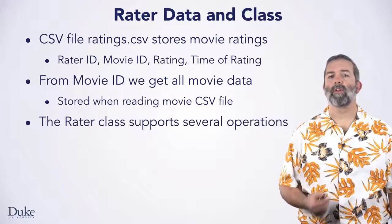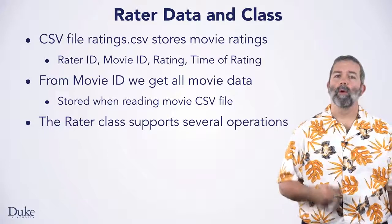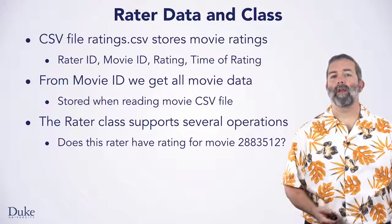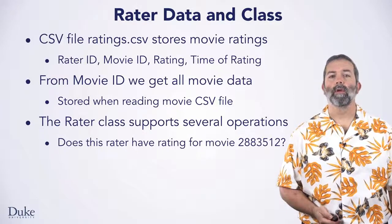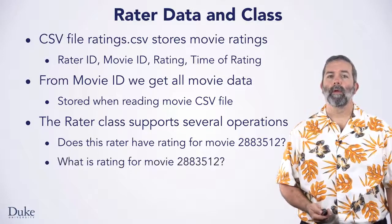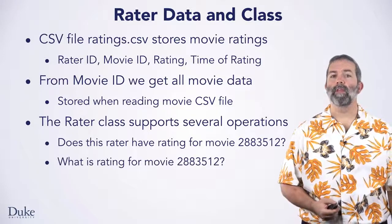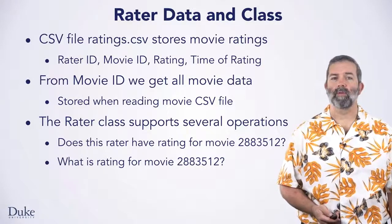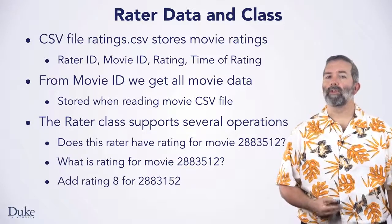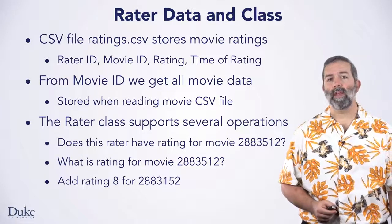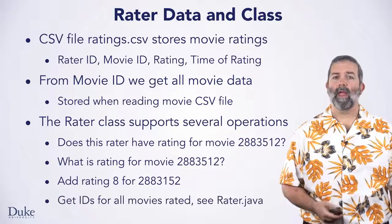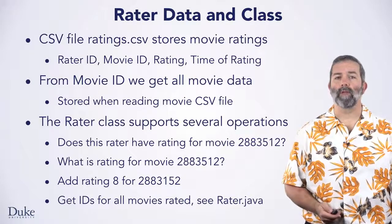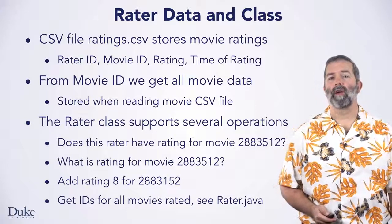The rater class supports several operations, so it's more complex than a POJO, which would support only simple get operations. You'll be able to determine if the rater has provided a rating for a specific movie using the Boolean method hasRating. You'll be able to obtain the rating for a movie specified by a movie ID using the method getRating, which returns a double. You'll be able to add a rating, which you might do when reading the rating data CSV file. And you'll be able to get all the movie IDs rated, so you can write code to iterate over all movies with ratings. See the rater.java class file for details.